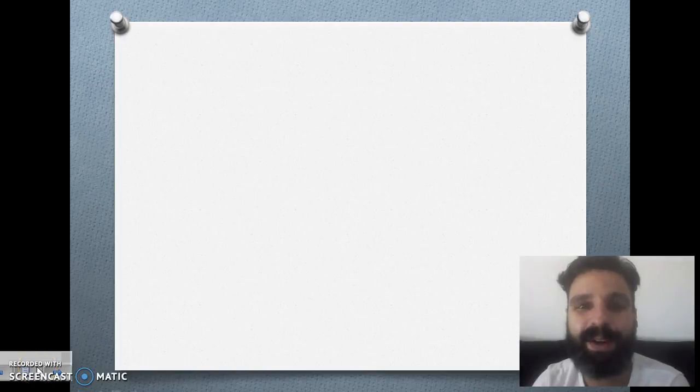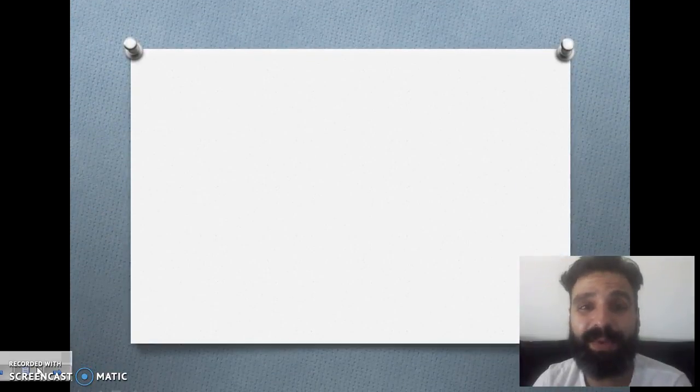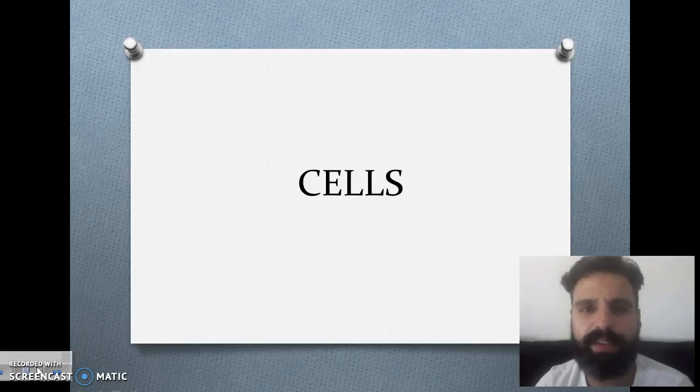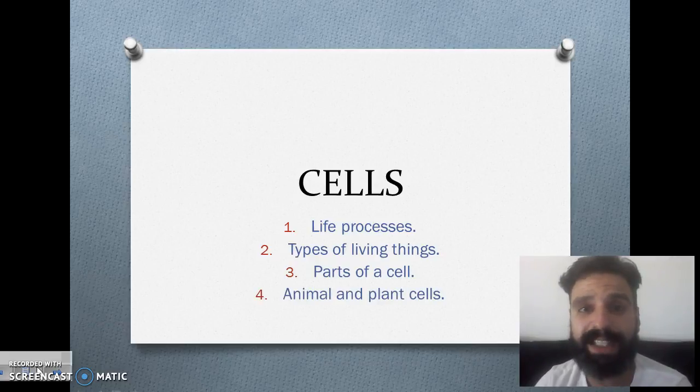Hello kids, I'm here to talk about unit number one in natural science which is about living things. We are going to start by talking about cells and there are four different parts. The first one is life processes, the second one is types of living things, number three parts of a cell, and finally animal and plant cells.